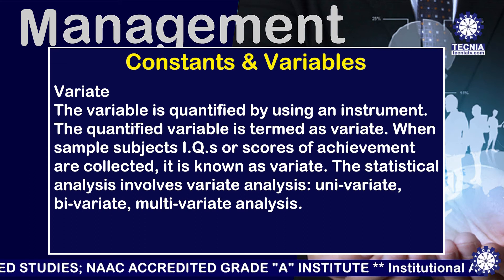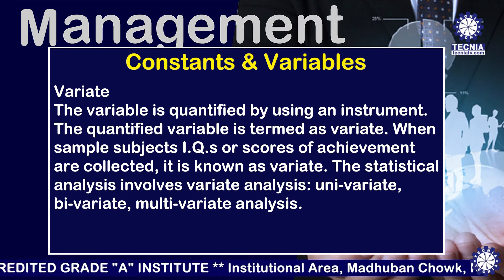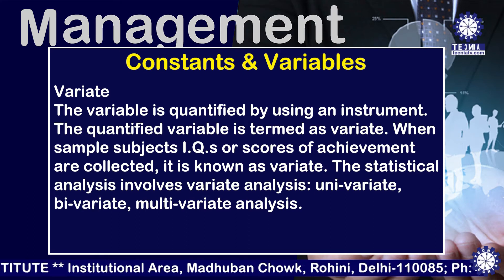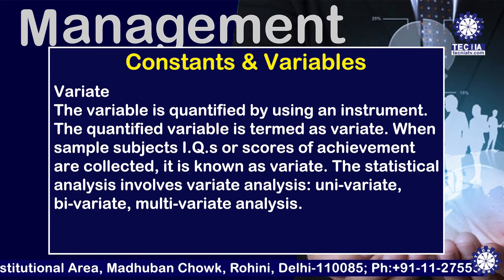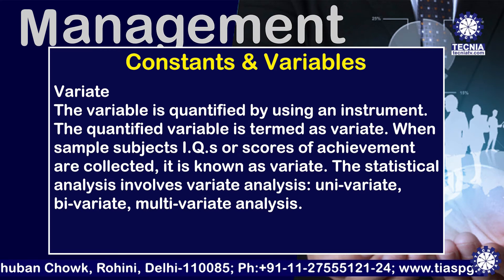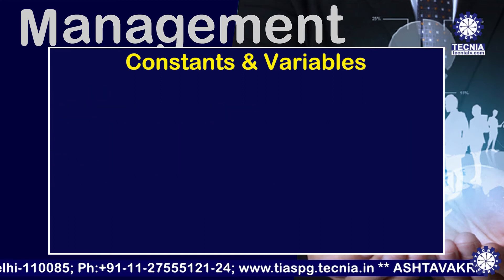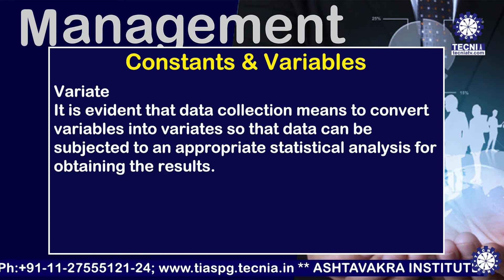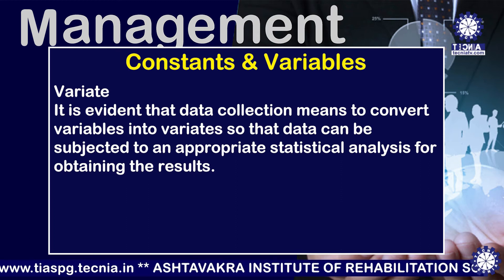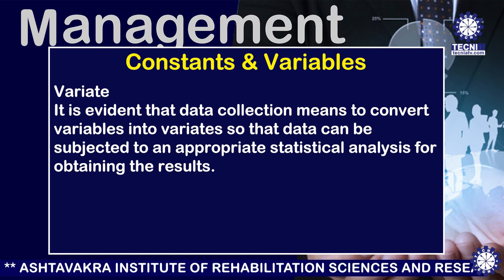What is a variate? A variable is quantified by using an instrument, and the quantified variable is termed as a variate. When sample subjects' IQs or scores of achievement are collected, it is known as variate. Statistical analysis involves variate analysis — that is, univariate, bivariate, and multivariate analysis. Data collection means converting variables into variates so that data can be subjected to appropriate statistical analysis.